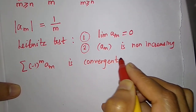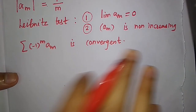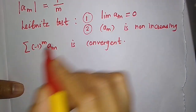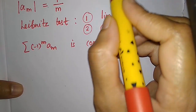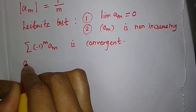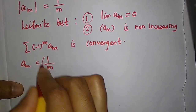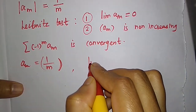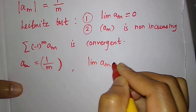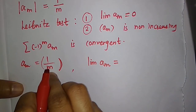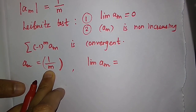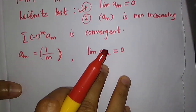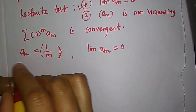Here a_m = 1/m. The limit of a_m is the limit of 1/m as m tends to infinity, which goes to 0. So the first condition is satisfied.